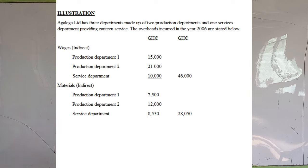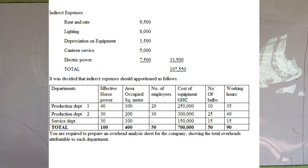Agar Legal Limited has three departments made up of two production departments and one service department providing canteen service. The overheads incurred in the year 2016 are stated below. We have indirect wages: Production Department 1 is $15,000, Production Department 2 is $21,000, Service Department is $10,000, making a total of $46,000. Indirect materials: Production Department 1 is $7,500, Production Department 2 is $12,000, and the Service Department is $8,550. Rent and rates is $9,500. Lighting is $8,000. Depreciation on equipment is $3,500. Canteen service is $5,000. Electric power is $7,500, giving a grand total of $107,550.